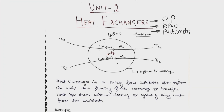We have completed the first unit on conduction. Now let us start heat exchangers. Heat exchangers are generally used in power plants, RAC, and automobiles. They are very important equipment. Let us say there are two fluids — one is hot fluid and the other is cold fluid — and we want to exchange heat between these two fluids so that our cycle is continuous.